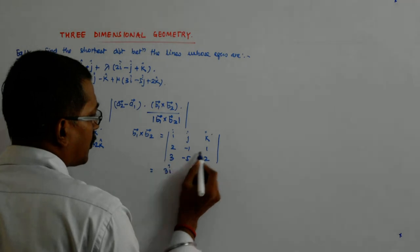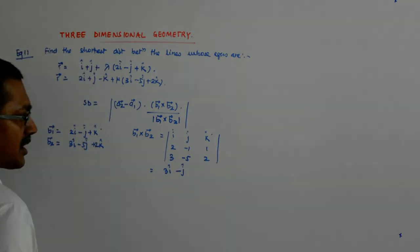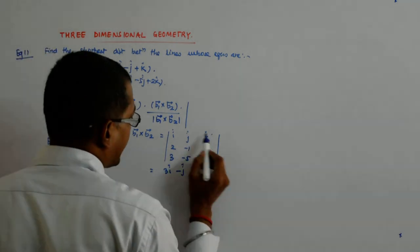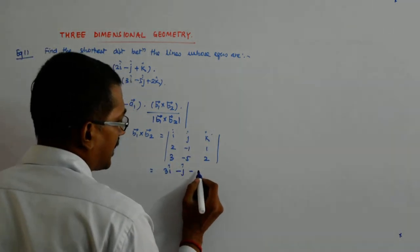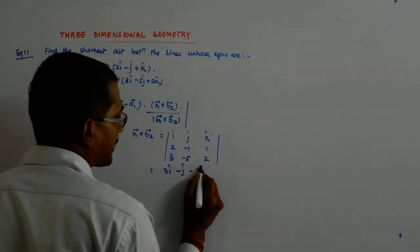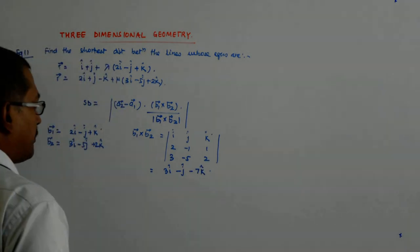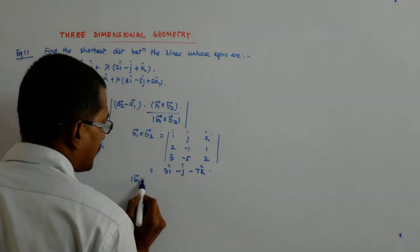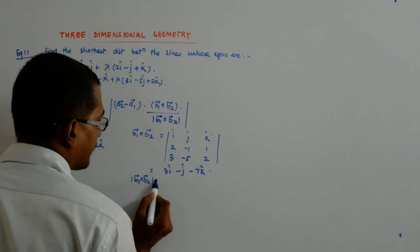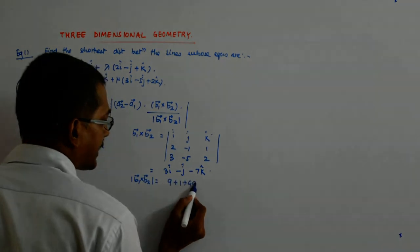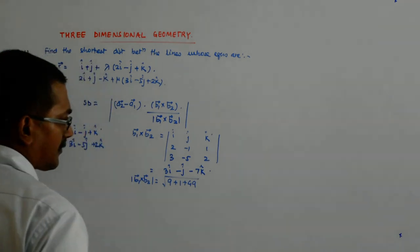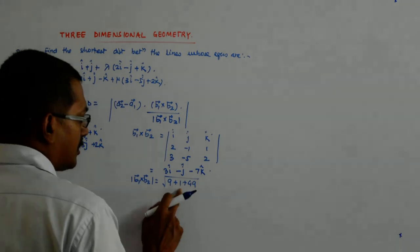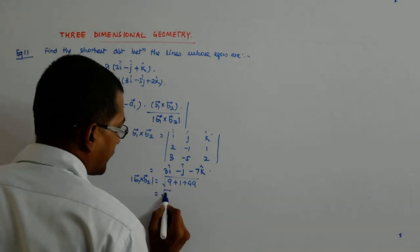Minus j into 4 minus 3, so minus j cap. Correct. But do I write the whole thing? Plus k cap into minus 10 plus 3. Minus 10 plus 3 is minus 7k cap. Correct. So, B1 cross B2 magnitude is 9 plus 1 plus 49. Is it not? 3 square plus minus 1 whole square plus minus 7 whole square. So, it is 59. So, it is root 59.